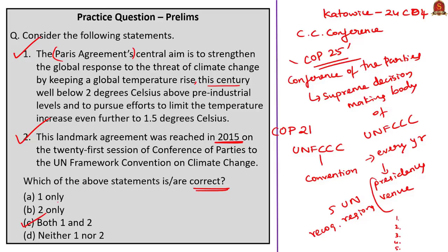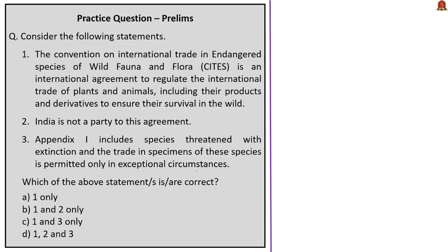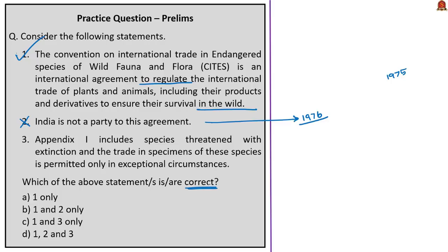This question is with reference to the CITES convention. The first statement: the Convention on International Trade in Endangered Species of Wild Fauna and Flora is an international agreement to regulate international trade of plants and animals including their products and derivatives to ensure their survival in the wild — correct. The second statement: India is not a party to this agreement. This is incorrect — India has been a party to CITES since 1976, after the agreement came into force in 1975. Since statement two is wrong, we can eliminate options B and D.